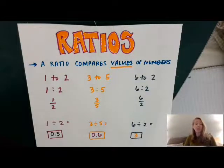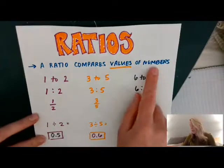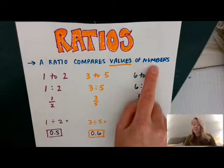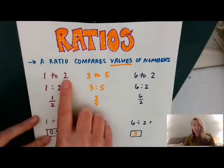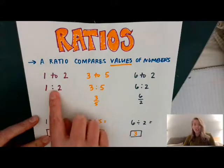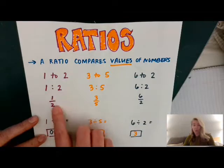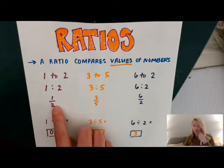Ratios are pretty cut and dry. A ratio is when you compare values of numbers, and you can get it in different formats. A lot of times you'll see it in this kind of format: 1 to 2, 1 colon 2, and then 1 half or 1 over 2 in fraction form.